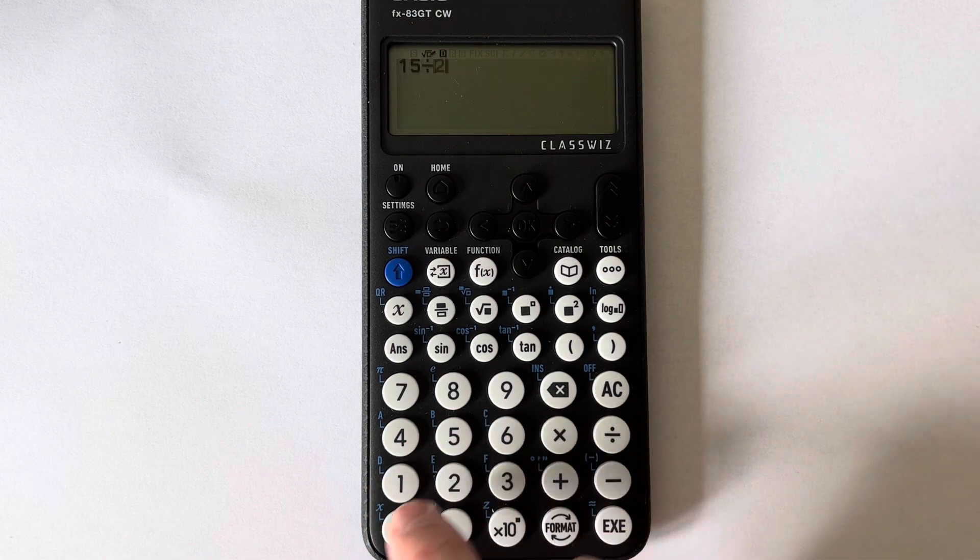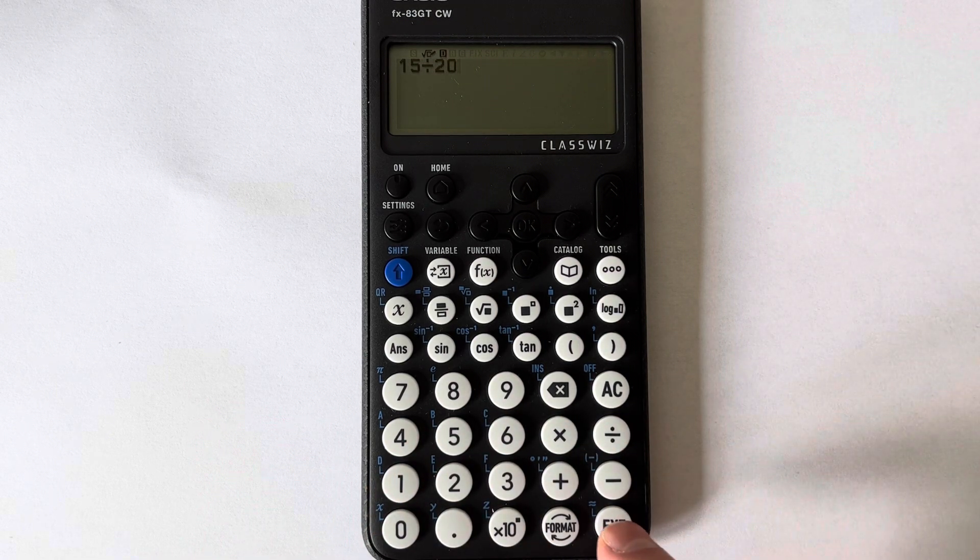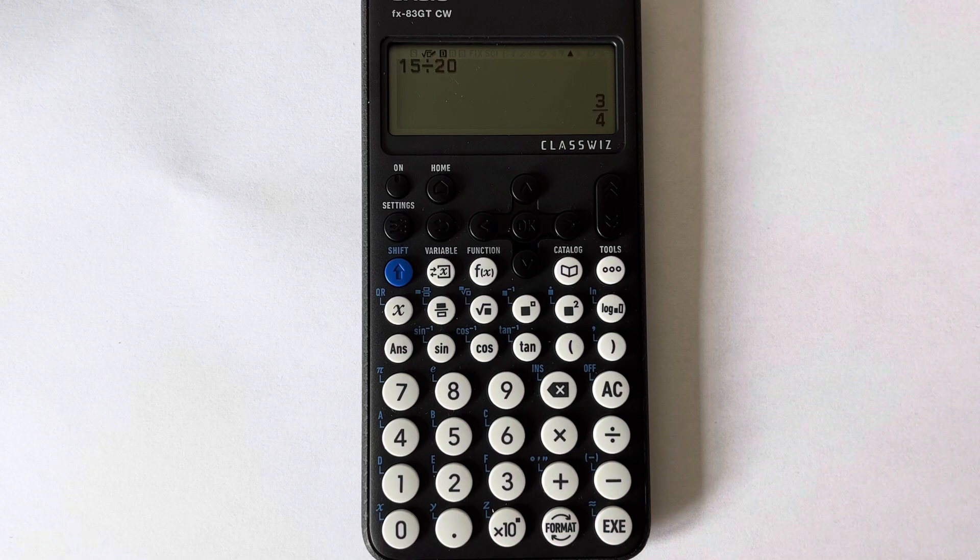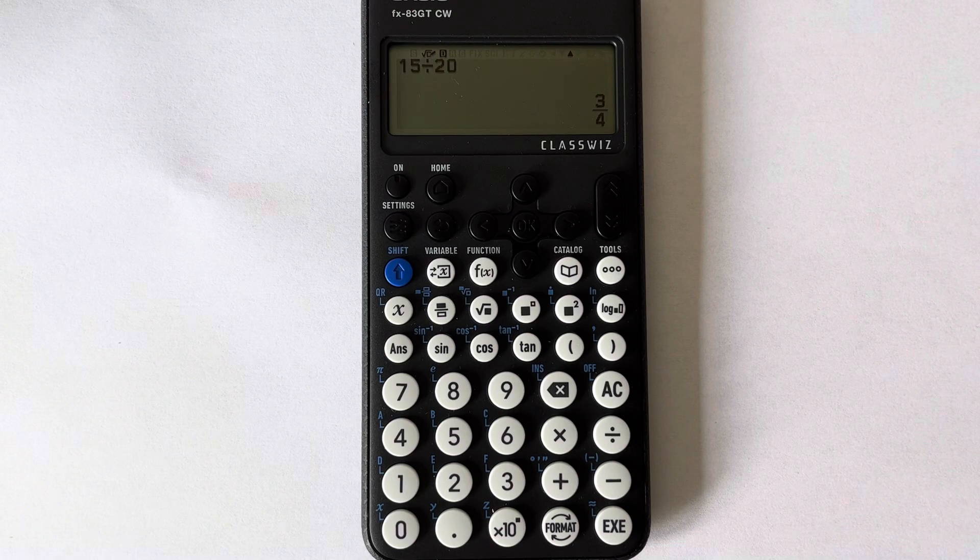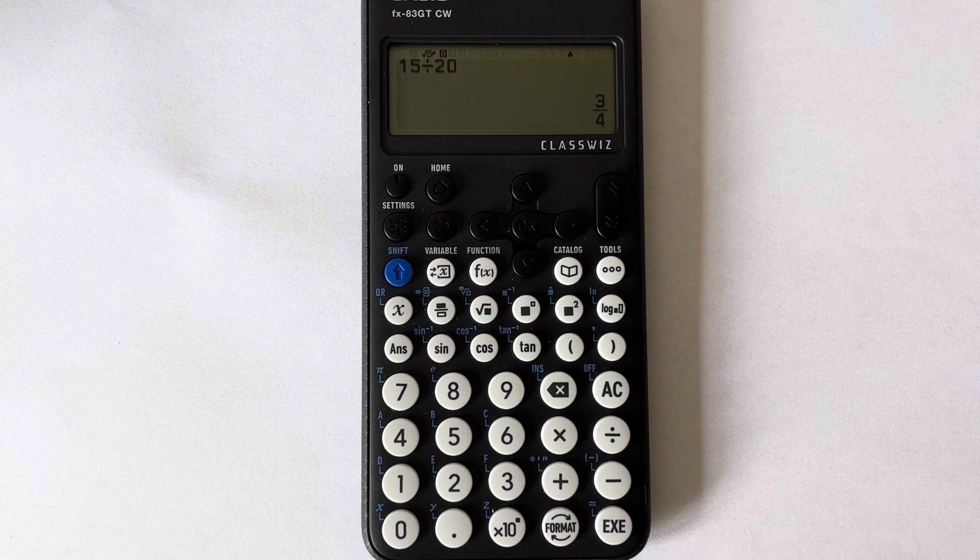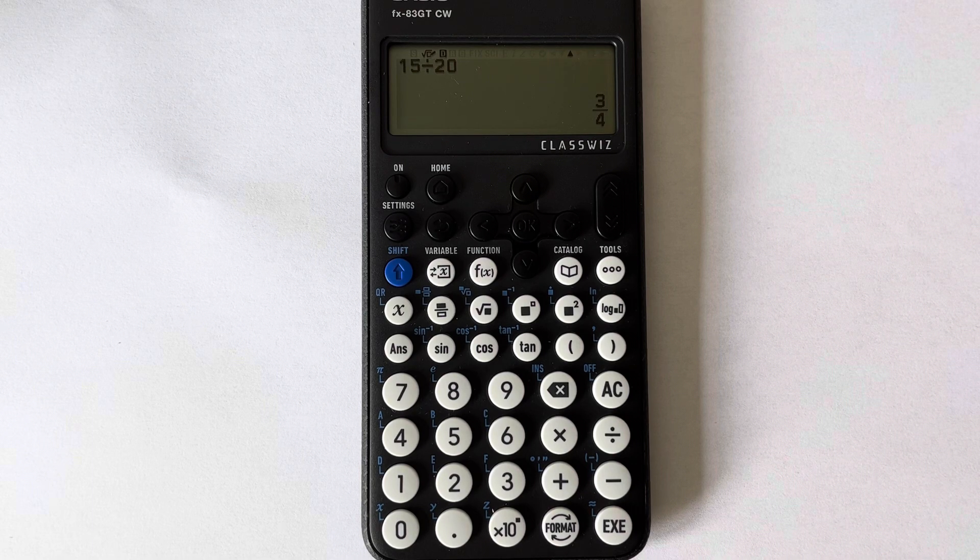So 15 divided by 20, press the execute. If you notice, you get the answer three quarters, so it's called as a fraction. Unlike the old calculators, there was an SD key on the calculator where you could convert it straight into a decimal.